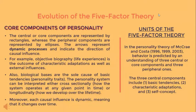In the personality theory of McCrae and Costa (1996, 1999–2003), behavior is predicted by understanding three central or core components and three peripheral ones. The three central components include basic tendencies, characteristic adaptations, and self-concept, represented by rectangles, whereas peripheral components are represented by ellipses. The arrows represent dynamic processes indicating the direction of causal influence. For example, biological bases are the sole cause of basic tendencies, and objective biography is the outcome of characteristic adaptations as well as external influences.